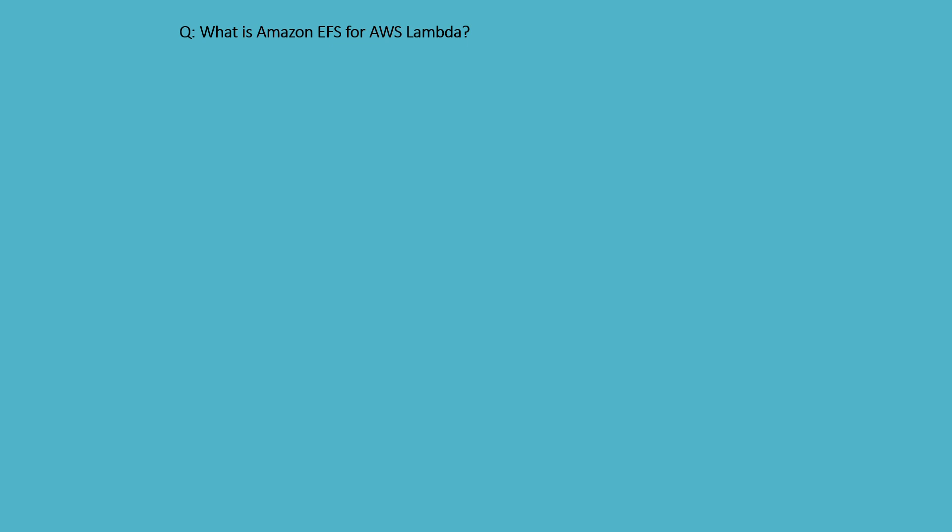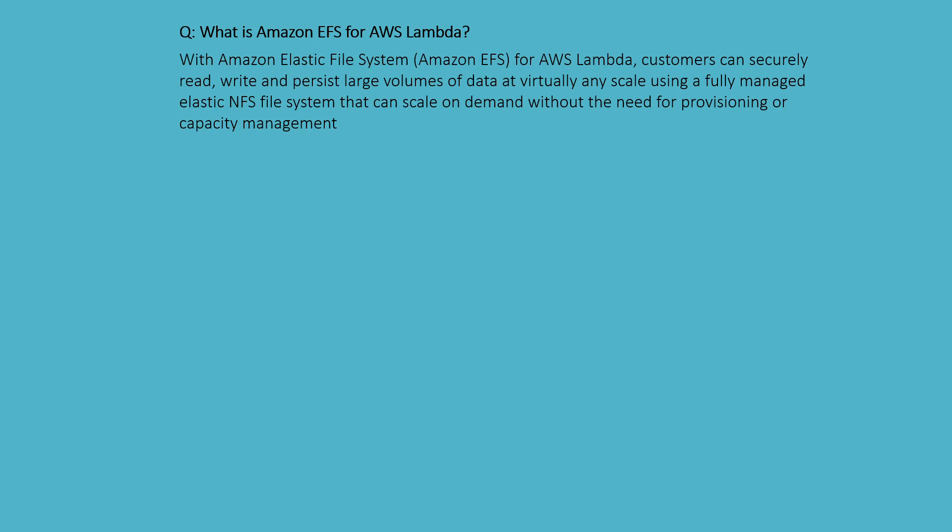What is Amazon EFS for Lambda? With AWS Elastic File System, AWS Lambda customers can securely read and write and persist large volumes of data at virtually any scale, using a fully managed elastic NFS file system that can be scaled on demand without the need for provisioning or capacity management.